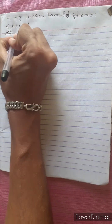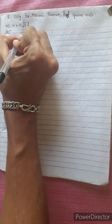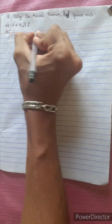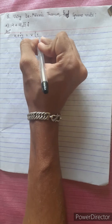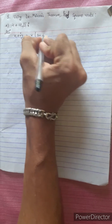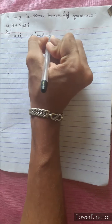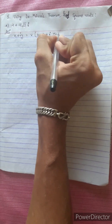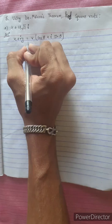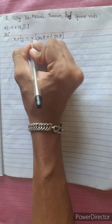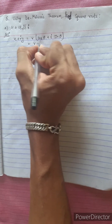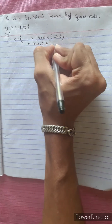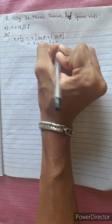The question involves the formula: x plus iy equals r cos theta plus i sin theta. This is a formula. Just multiply to get r cos theta plus i r sin theta.